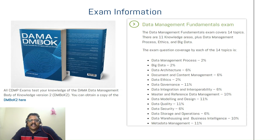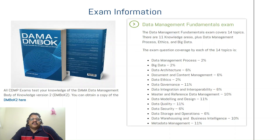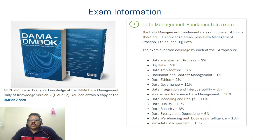The data management fundamental exam covers 14 topics — 11 knowledge areas from the DAMA International wheel, plus Data Management Process, Ethics, and Big Data. When you pass this exam with a score of 60% or more, you are recognized as a CDMP Associate.